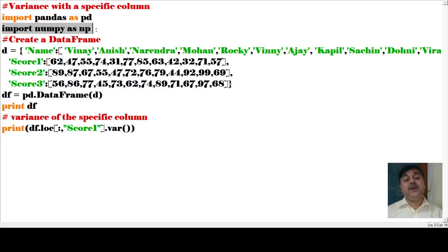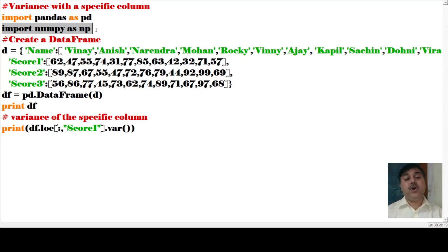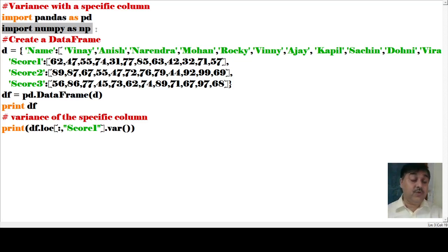Then what has been done: df equals pd.DataFrame(d), and print(df). After that, print(df.loc['score1'].variance()) — that means the variance of score1 is being calculated. So this is what you can see in this particular program.